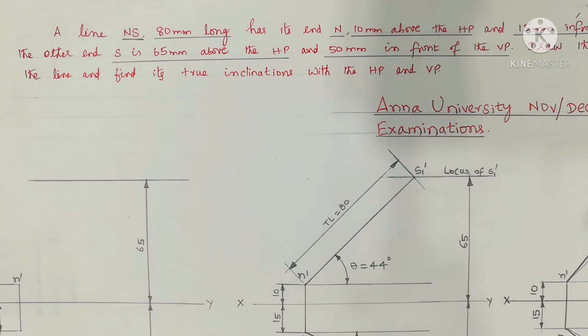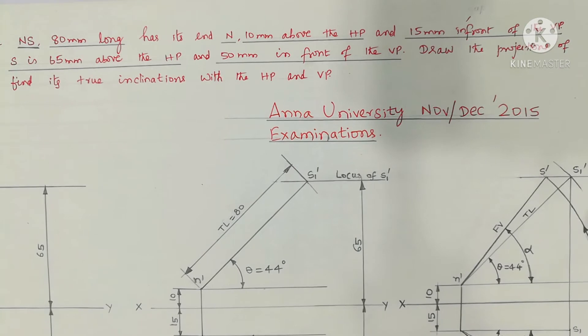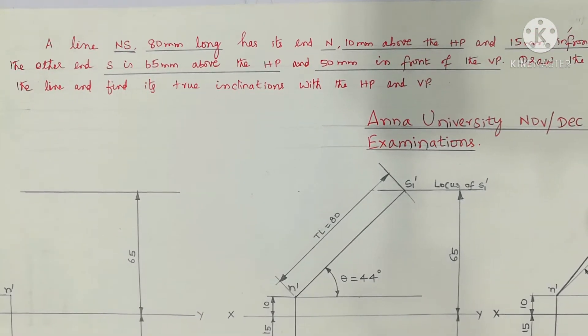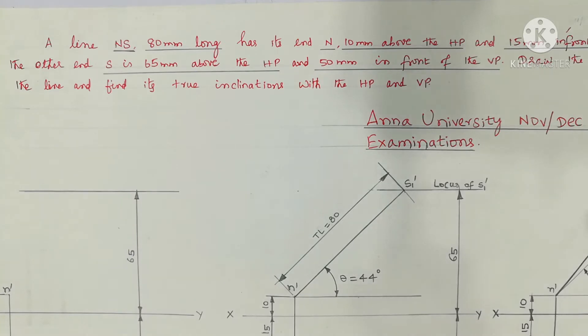Welcome. Topic: projection of straight lines. A line NS, 80mm long, has its end N 10mm above the HP and 15mm in front of the VP. The other end S is 65mm above the HP and 50mm in front of the VP.